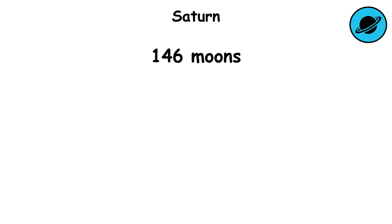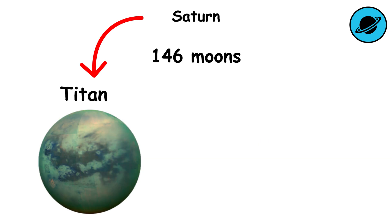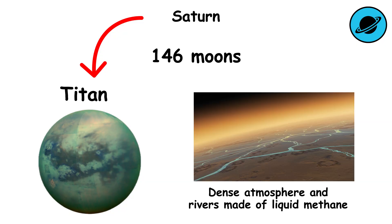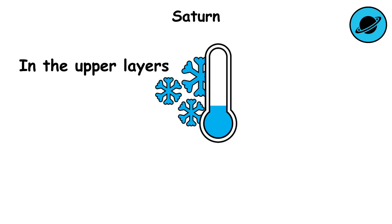The planet has 146 moons, with the largest being Titan, which has a dense atmosphere and rivers made of liquid methane. In the upper layers of Saturn's atmosphere, the temperature is approximately minus 178 degrees Celsius, or minus 288 degrees Fahrenheit.